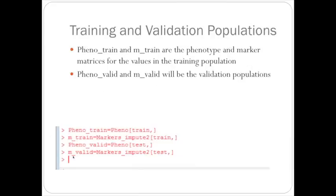So to set the training and validation matrices, I renamed pheno_train and m_train as the phenotype and marker matrices for the values in the training population,